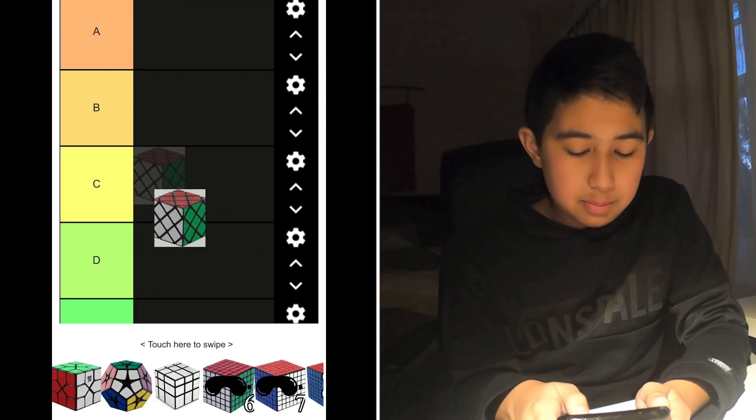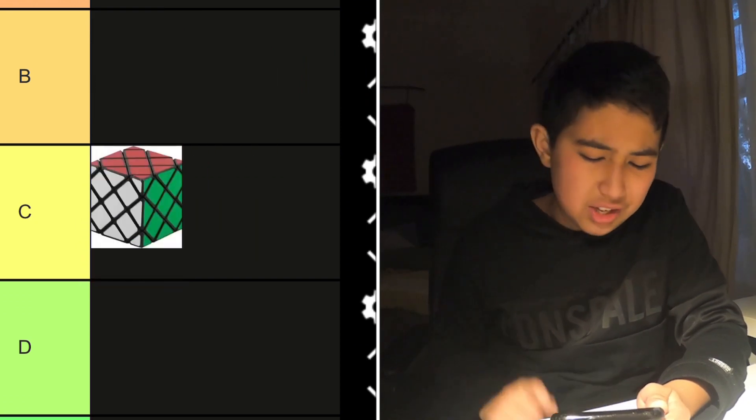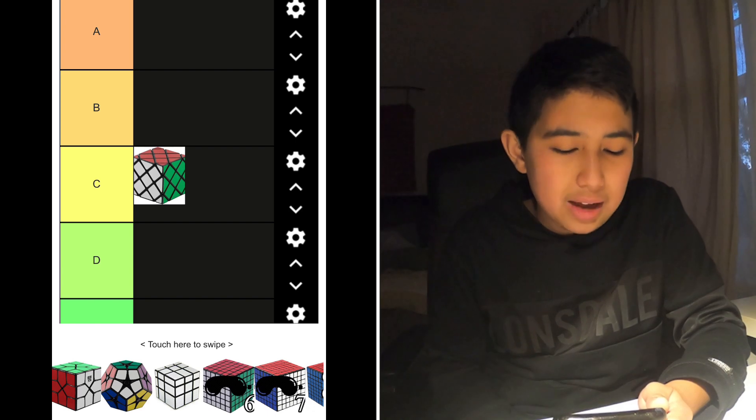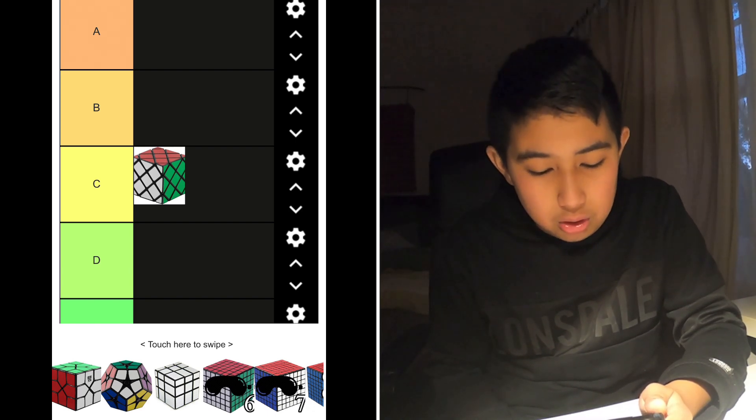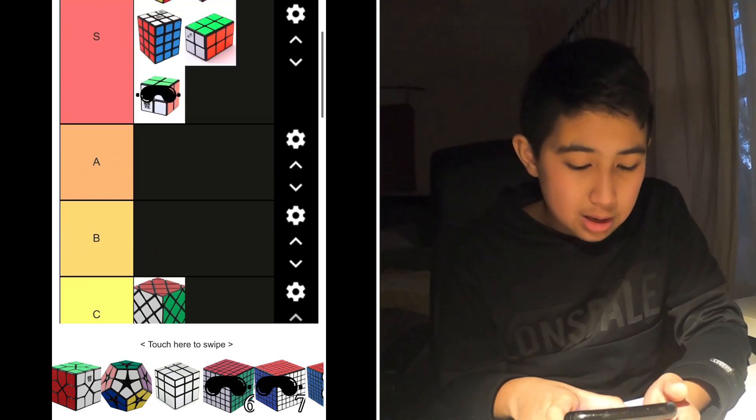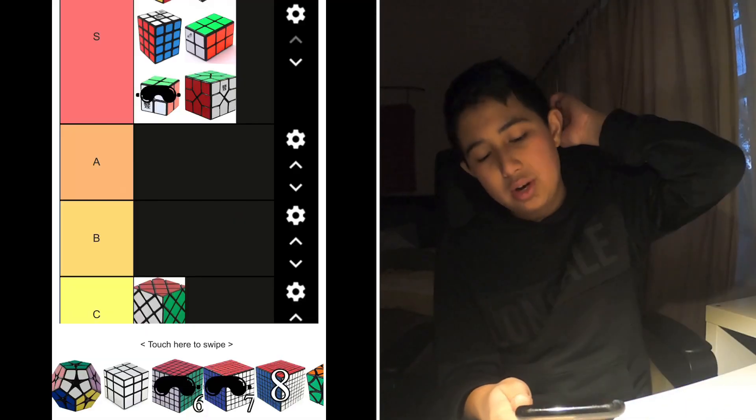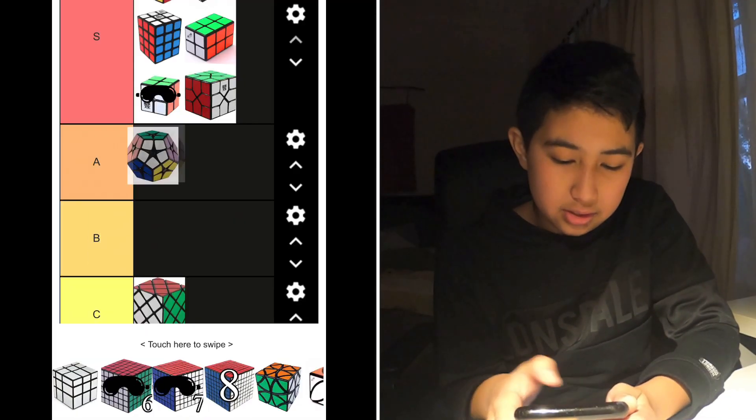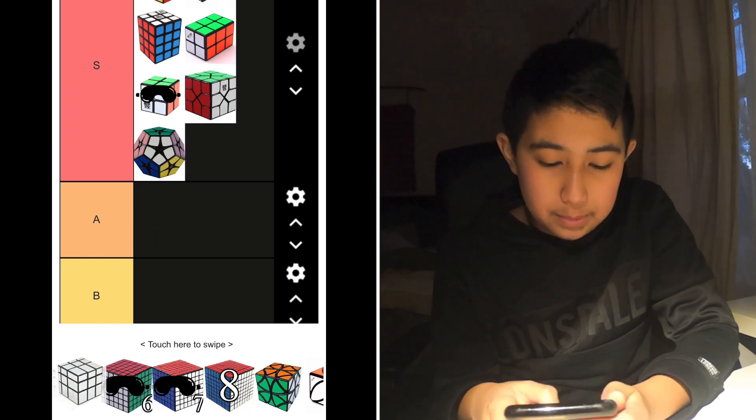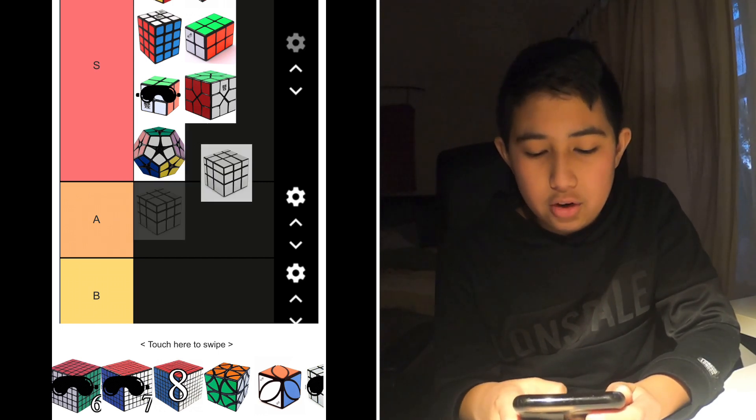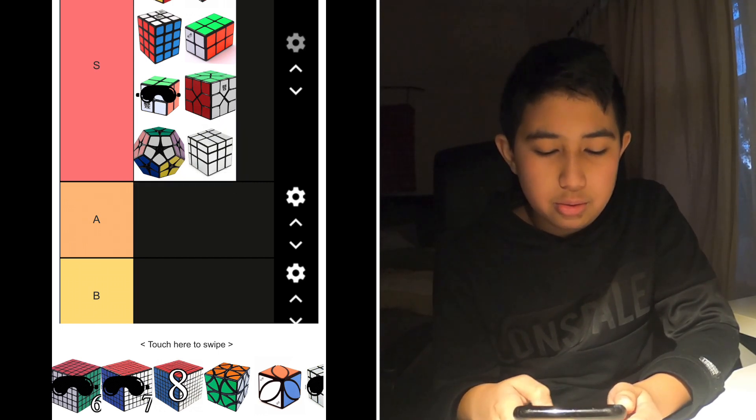That gets F tier. Master skewb gets C tier. It doesn't look... it looks interesting, but I feel like people would want to learn that. Skewb? That actually gets S tier as well. Kilominx gets S tier. Mirror cube gets S tier. So kilominx is basically the same as megaminx but it's like a 2x2 version, and mirror cube is really similar to a 3x3, just like a different solving.